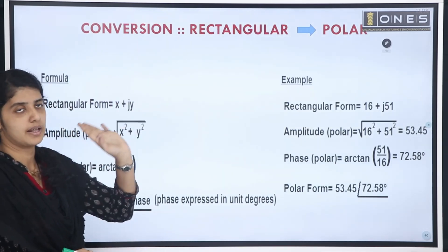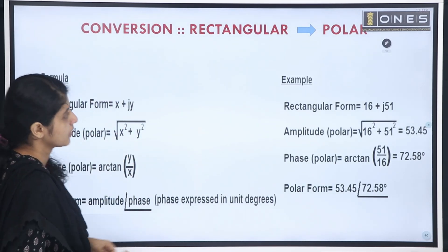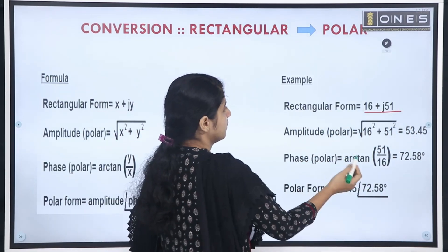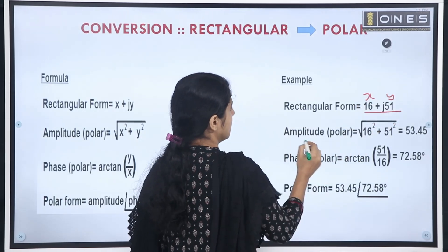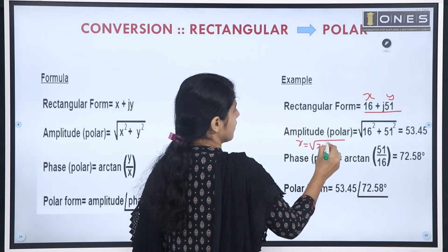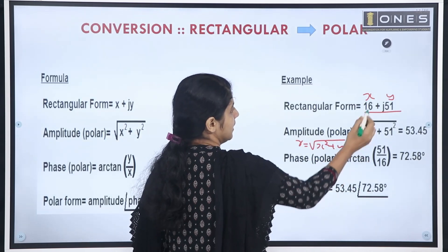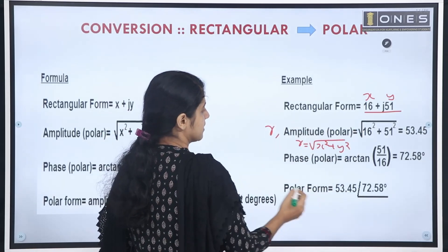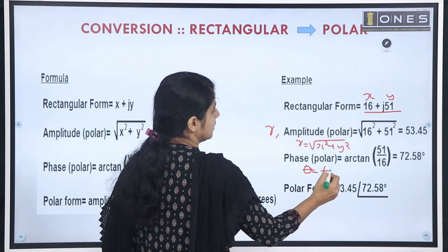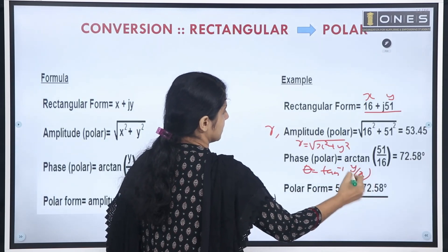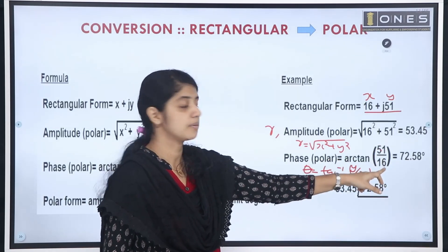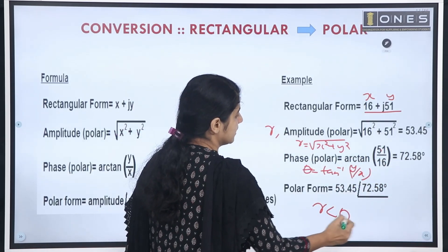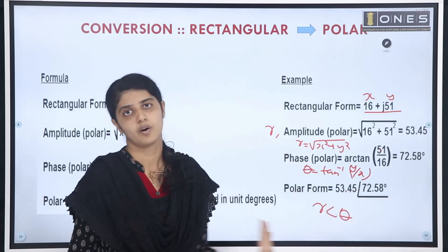Rectangular to polar conversion example: 16 plus j51. Here x is 16 and y is 51. We calculate r as root of 16 squared plus 51 squared. For theta, we use tan inverse of 51 by 16. This gives us the polar form result.